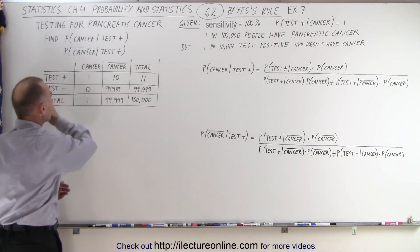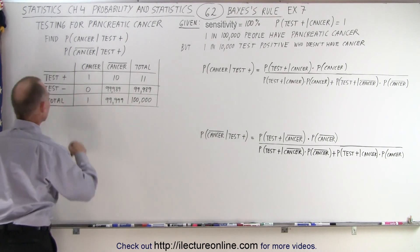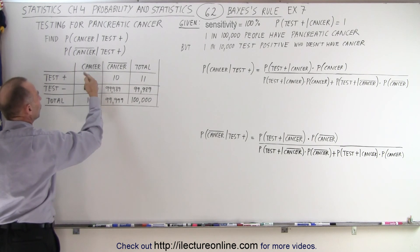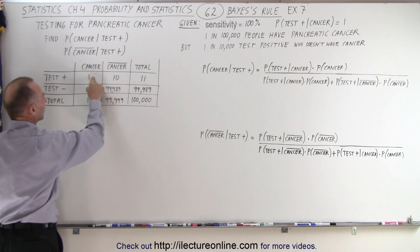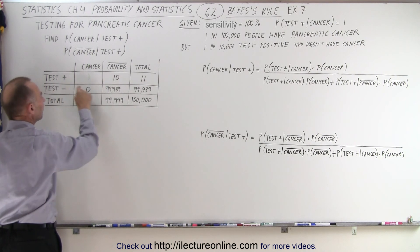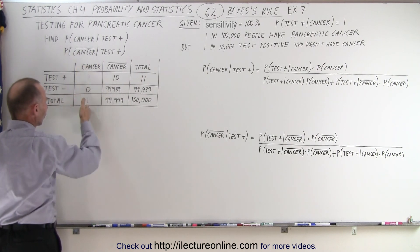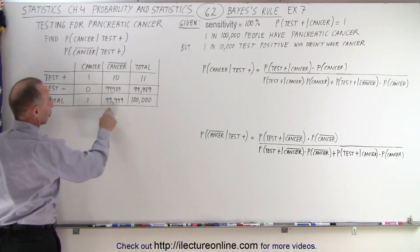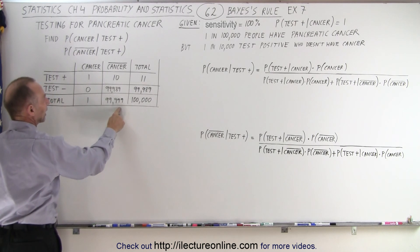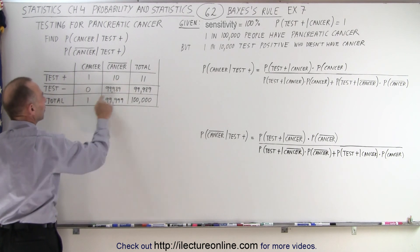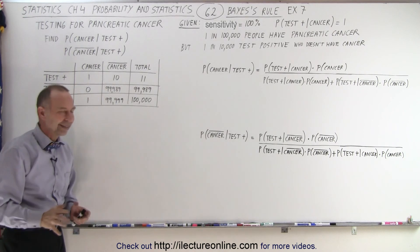We've also put together a table here. You can see that you test positive or negative if you have cancer. Since there's 1 in 100,000 people, so there's a total of 100,000 people — 1 that has cancer will test positive, and of course 0 will test negative. That gives a total of 1 person that has cancer, and a total of 99,999 who doesn't have cancer. 10 of those will test positive, and the rest will test negative.